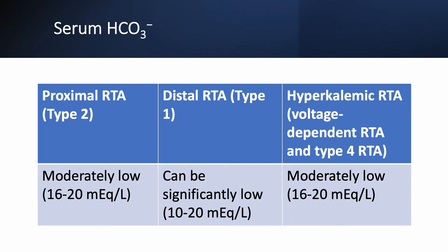What happens to serum bicarbonate? In proximal RTA, it is moderately low. In distal RTA, it can be significantly low. And in hyperkalemic RTA, it's moderately low. As you can see, there is significant overlap, so you cannot really distinguish between these three types just based on serum bicarbonate.